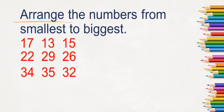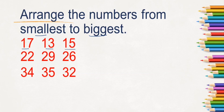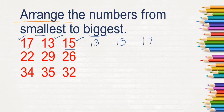Here we need to arrange the numbers from smallest to biggest. In the given row, the numbers are 17, 13, and 15. Which is the smallest number? It's 13. So we will write 13 first. Next, which is the second smaller number? 15. And the biggest number is 17.